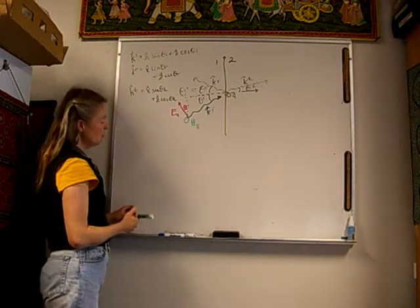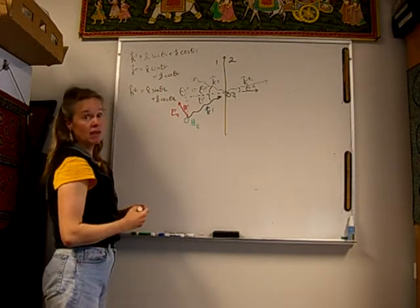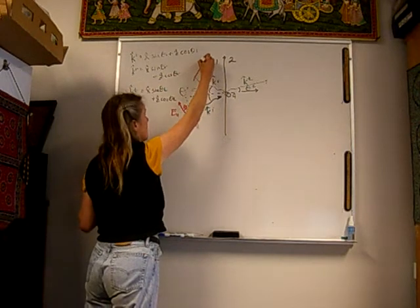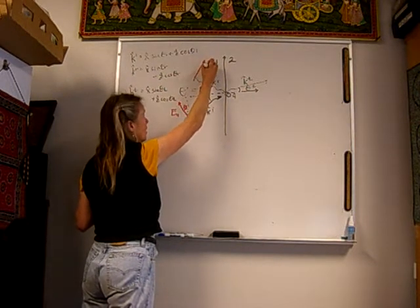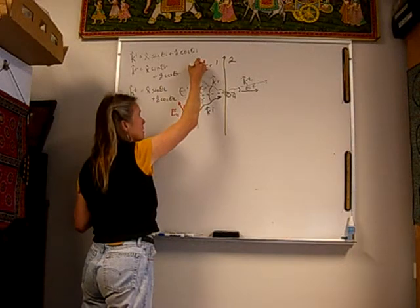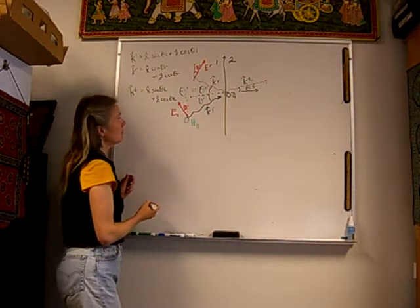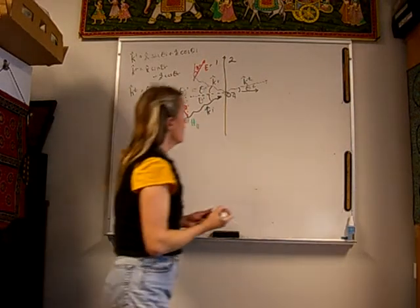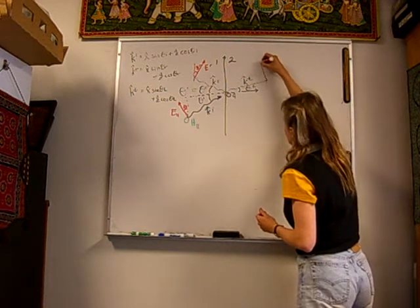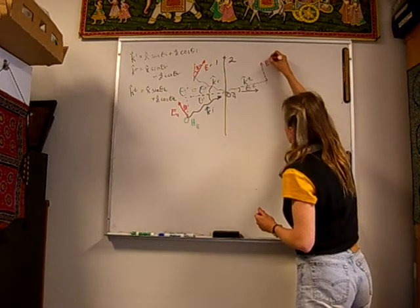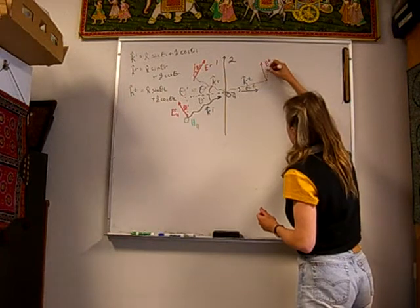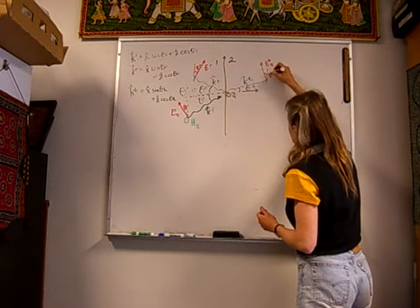Now let's do the reflected field. The electric field vector does not change polarization — it comes like this. Here is the reflected electric field, and right there is the angle of reflection. The transmitted electric field also retains its polarization. Here is the transmitted parallel polarized case, and right here is theta t.